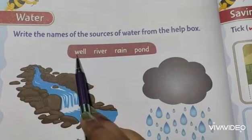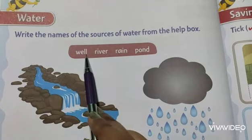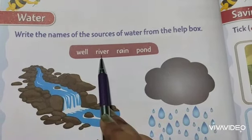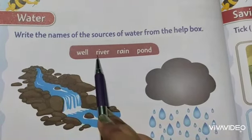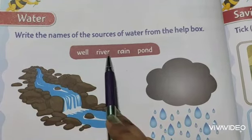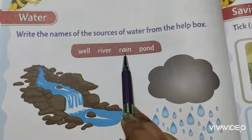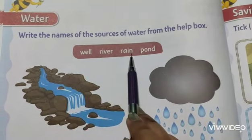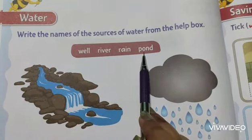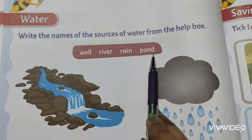The sources listed in the help box are: Well — W-E-L-L; River — R-I-V-E-R; Rain — R-A-I-N; and Pond — P-O-N-D.